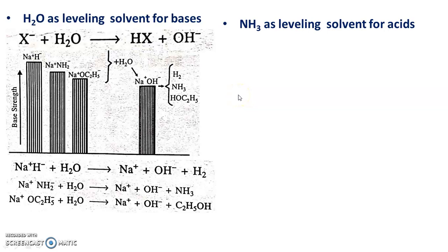A basic solvent like ammonia acts as a leveling solvent for acids. A solvent which is more basic than water, like ammonia, produces a leveling effect on acids. In ammonia, all strong acids are leveled to the level of a weak acid — specifically to the level of ammonium ion NH4+. Hence, acetic acid is as strong as hydrochloric acid or nitric acid in liquid ammonia, because all these acids are leveled to the same acidic level of NH4+.